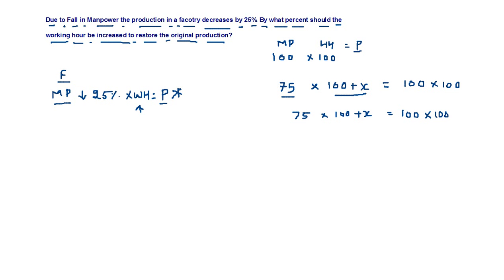What we can do is take this 75 on the right hand side. This is 100 plus x is equal to 100 into 100 upon 75. We can cancel this by 25, this is 3, this is 4. So it is 400 upon 3.